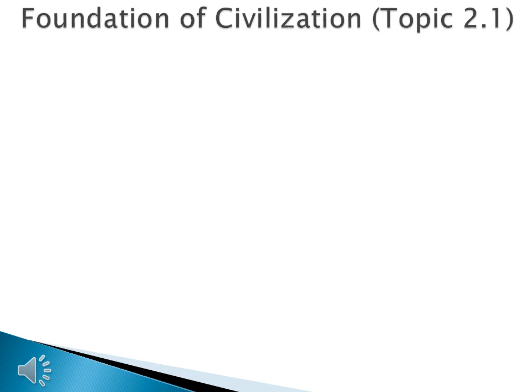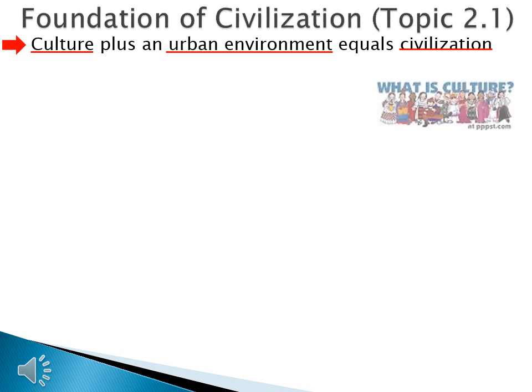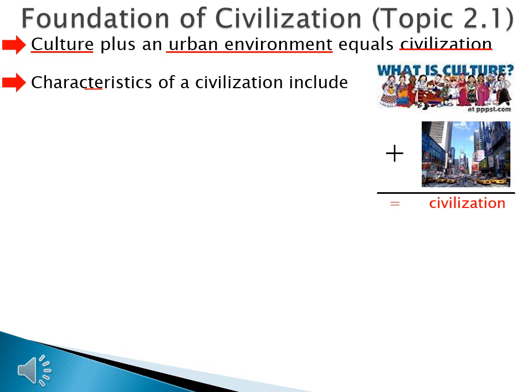Today we look at the essential issues from Unit 2, Ancient River Valley Civilizations. Open your notes to Unit 2 and read along. If you see something you do not understand, go into your notes or find the lecture on the topic you need help with. We start with Foundation of Civilization, Topic 2.1, and we learn that culture plus an urban environment equals civilization. You need culture plus urban culture to have a civilization.